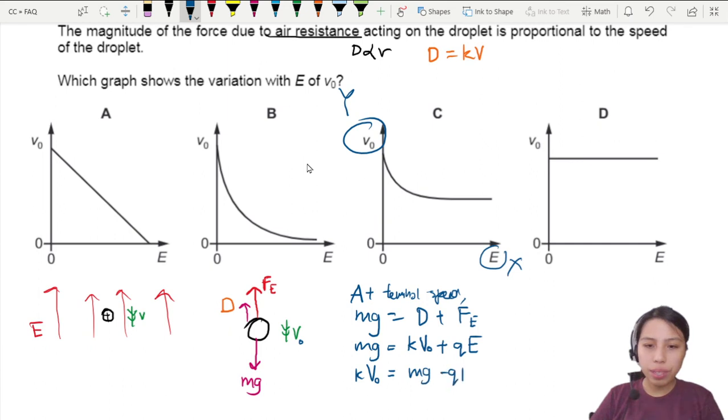Last step, I will go to this side next to my head. So I can say v₀ equals to negative q over k times E plus mg over k.